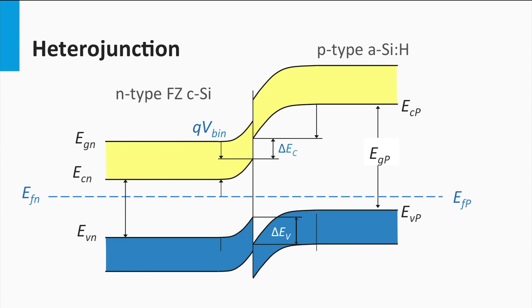However, you can also make a junction by two different semiconductor materials. For instance, one semiconductor material that is P-doped and another type of semiconductor material that is N-doped. This is what we call a heterojunction.